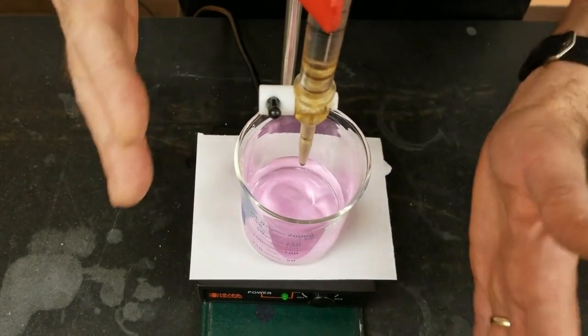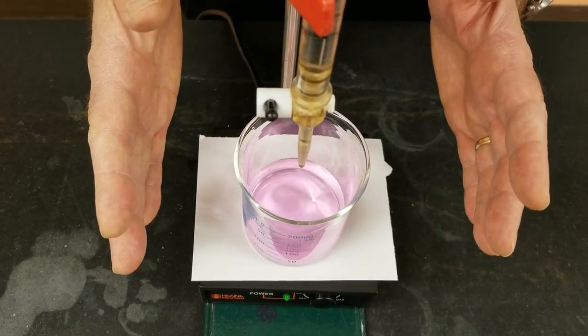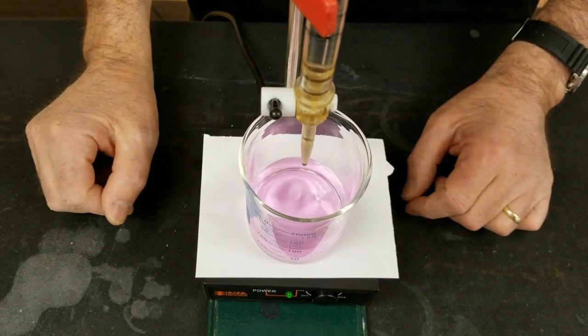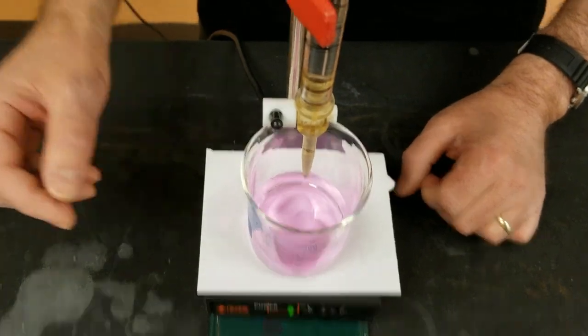And the equivalence point and the end point are literally separated by only one drop of OH- added. So we are there, the titration is over, we can read the volume.